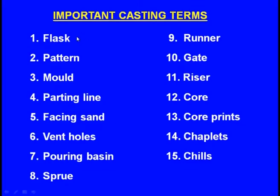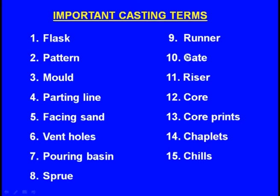Now let us see the important casting terms used in sand moulding. These are: flask, pattern, mould, parting line, facing sand, vent holes, pouring basin, sprue, runner, gate, riser, core, core prints, chaplets, and chills — fifteen terms in total. A few more casting terms will be seen when we come across them.